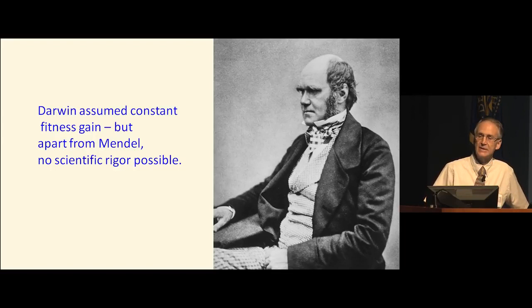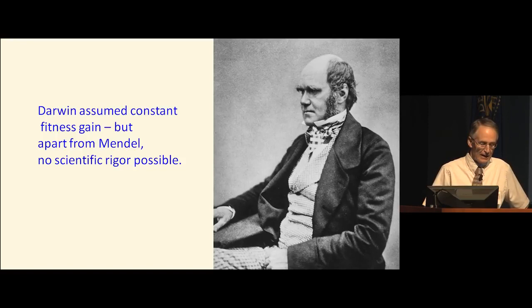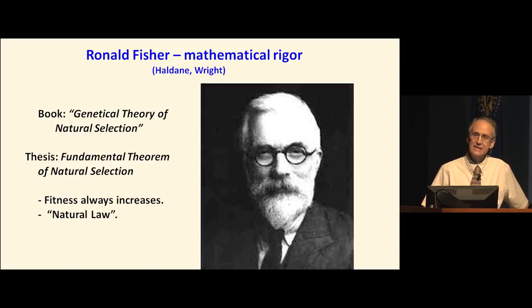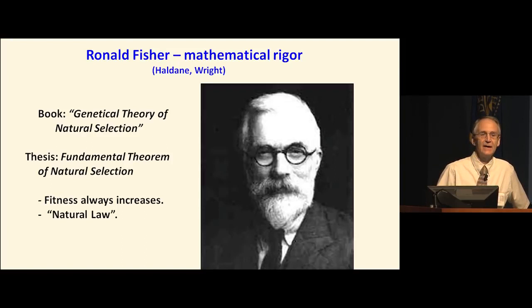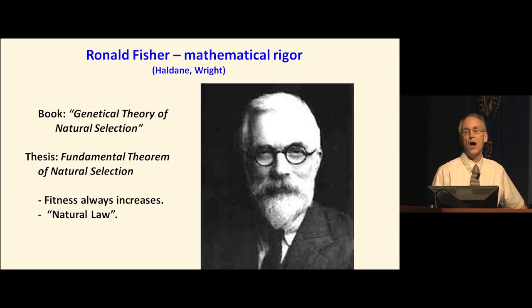Darwin's book is largely philosophical and conceptual, not really subject to testing, because there was no way to know what was being transmitted. With the coming of Ronald Fisher decades later, Fisher brought mathematical rigor to the understanding of selection — he is really the father of population genetics. Haldane and Wright also contributed, but Fisher got it started with his book Genetical Theory of Natural Selection. His thesis proves what he calls the fundamental theorem of natural selection: that fitness would always increase universally and automatically. Most biologists know that's not true, but it was held up as a mathematical proof and compared by Fisher to a natural law — even likened to entropy, or the second law of thermodynamics.